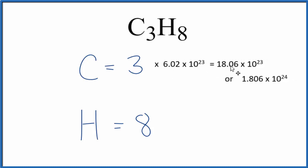18.06 times 10 to the 23rd. That's the number of carbon atoms in one mole of C3H8. Likewise, we could multiply 8 by Avogadro's number and that would give us the number of hydrogen atoms in C3H8 as well.